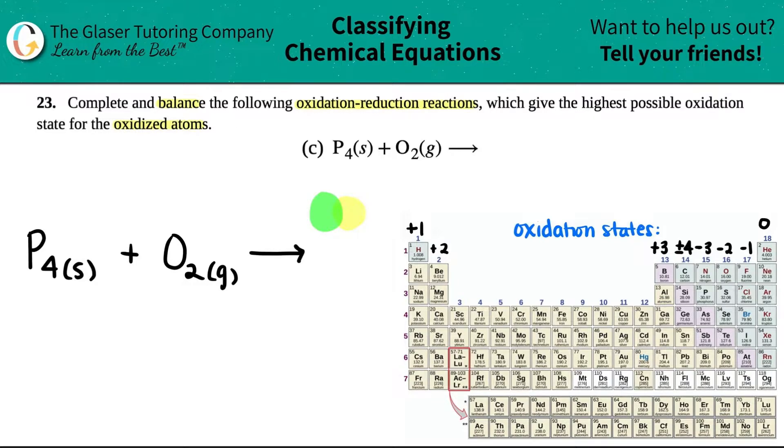But the phosphorus is still the green and the oxygen is still the yellow. This is a synthesis reaction when you're taking two individual atoms and you're combining them to form a compound.